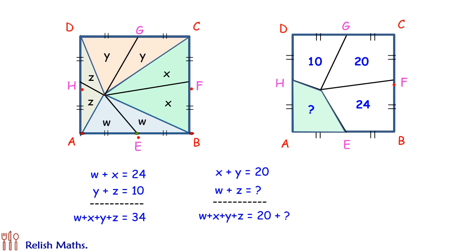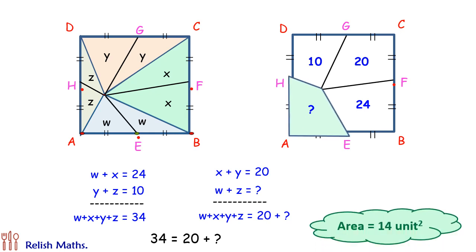Let us add left and right sides separately. We'll find w + x + y + z is 54 on the left side, and 20 plus the area to be found on the right side. On comparing them, we'll get our area as 14 unit square.